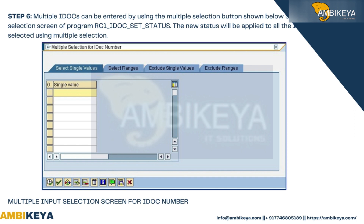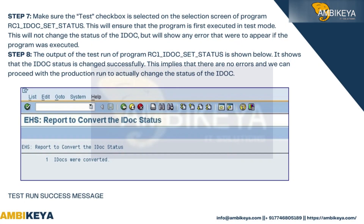Step 7: Make sure the test checkbox is selected on the selection screen of RC1_IDOC_SET_STATUS. This ensures the program is first executed in test mode, which will not change the status of the IDoc but will show any errors that would appear if the program were executed. Step 8: The output of the test run shows that the IDoc status is changed successfully, implying there are no errors.